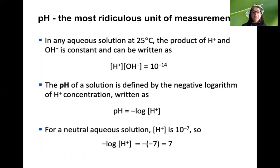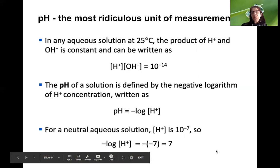For neutral solutions, the hydrogen ion concentration is 10 to the negative 7, and the hydroxyl ion concentration is also 10 to the negative 7. When you multiply them, it becomes 10 to the negative 14. Plugging into the formula: negative log of 10 to the negative 7 equals negative negative 7, which is 7. So pH of 7 means the concentration of hydrogen ions is 10 to the negative 7 — that's 0.0000001. This log scale is used because the concentrations are very, very small.